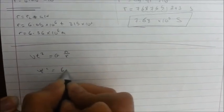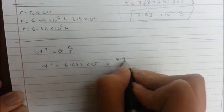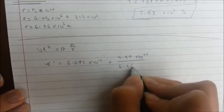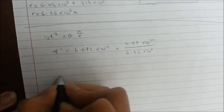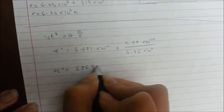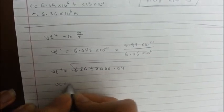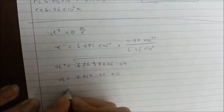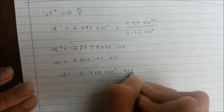Vt squared equals 6.673 times 10 to the power of negative 11 times 5.97 times 10 to the power of 24 over 6.36 times 10 to the power of 6. Vt squared equals 62,638,066.04, so Vt equals 7,914.42 meters per second. Our final answer is 7.914 times 10 to the power of 3 meters per second.